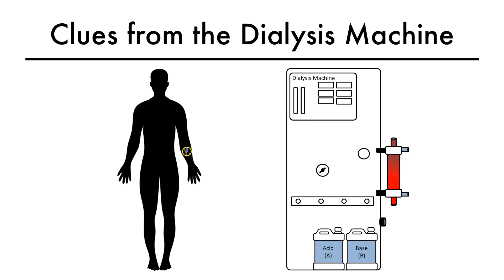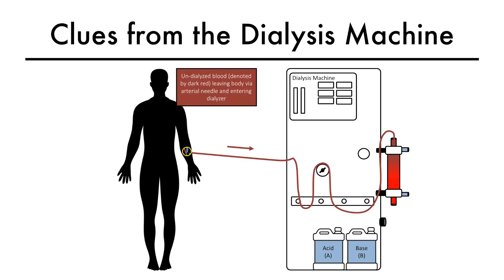This is our hemodialysis machine. This is the filter, also called the dialyzer, and this is the blood pump. Undialyzed blood, denoted by dark red, leaves the axis via the arterial needle and enters the dialyzer at the arterial end.